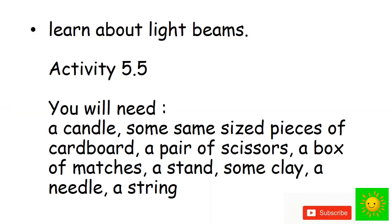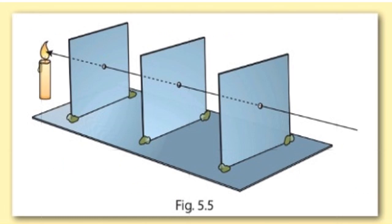Let's do this activity to learn about light beams. We will need a candle, pieces of cardboard, a pair of scissors, box of matches, stand, clay, needle, and string. What we have to do: make holes in the pieces of cardboard as shown in the figure.